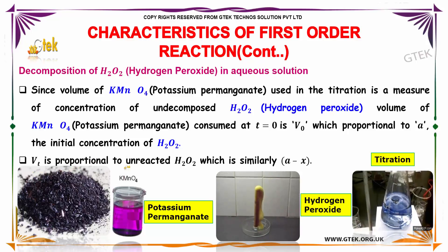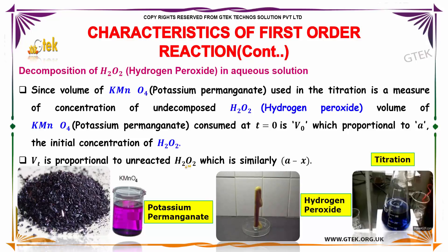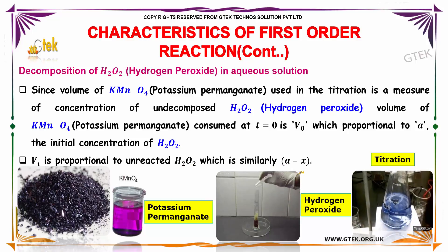Vt is proportional to unreacted hydrogen peroxide, which is similarly (A minus x).